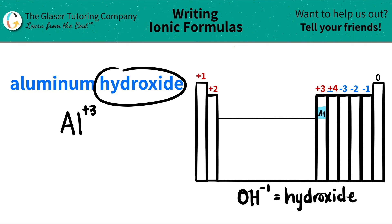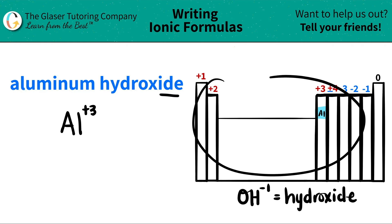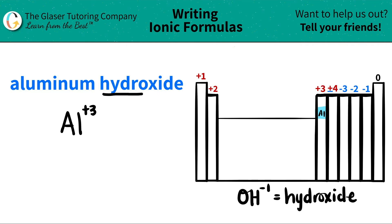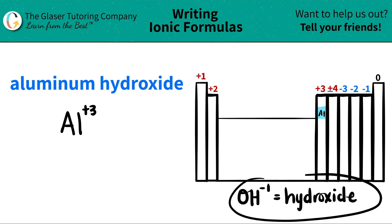Now I move to the next part. I see that I have hydroxide. It's an -ide ending, which means that maybe it's going to be a non-metal. Non-metals always get the -ide ending. But if I look on the periodic table for something called hydroxium or something like that, I'm not going to find it — which means star this one up, guys. Hydroxide is actually a polyatomic ion.